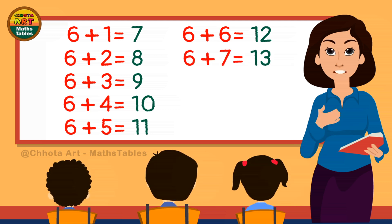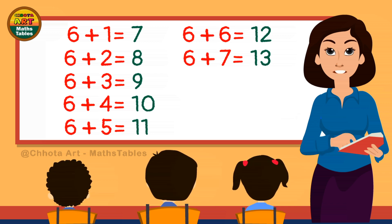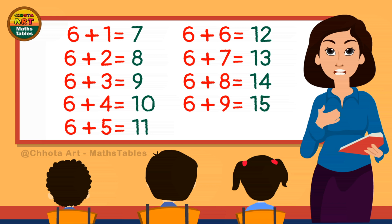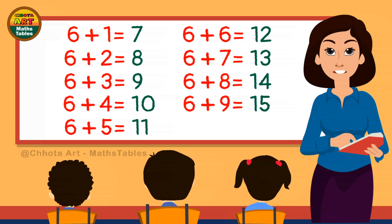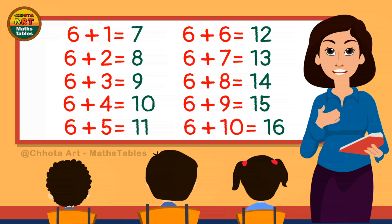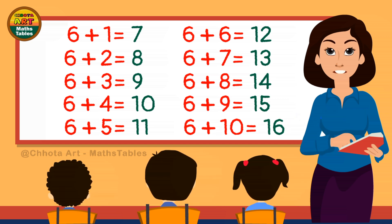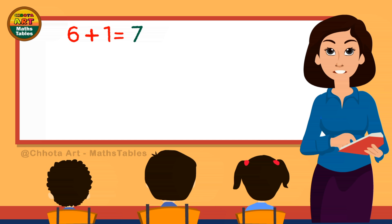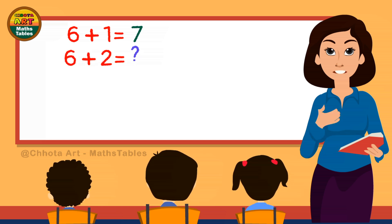6 plus 7 is 13. 6 plus 7 is 13. 6 plus 8 is 14. 6 plus 8 is 14. 6 plus 9 is 15. 6 plus 9 is 15. 6 plus 10 is 16.